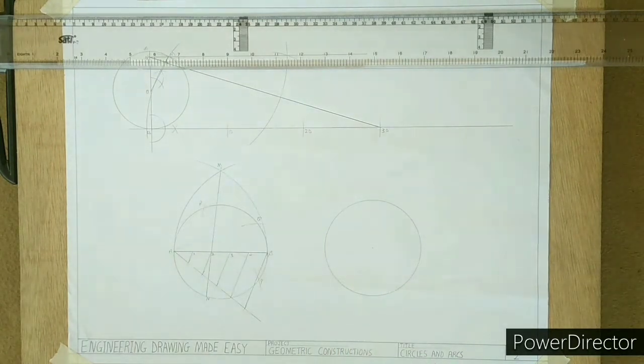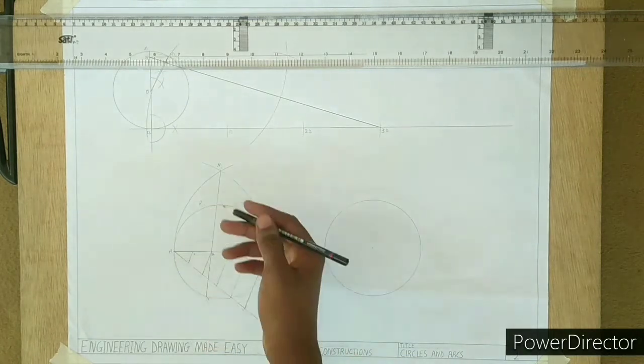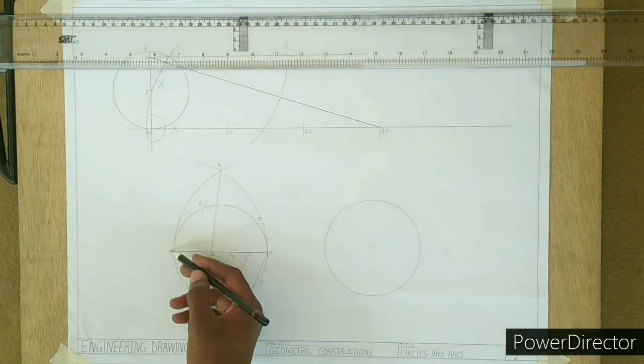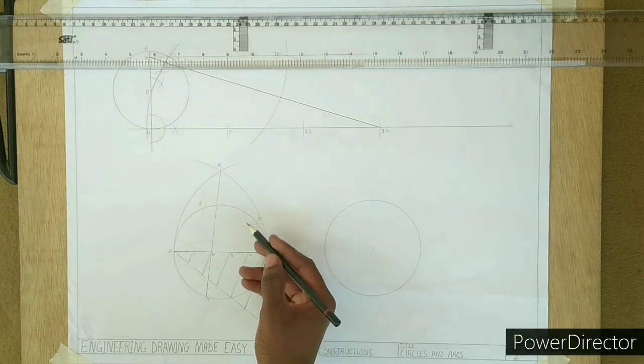And that is all to divide the circumference of a circle into a number of equal parts: 1, 2, 3, 4, 5.